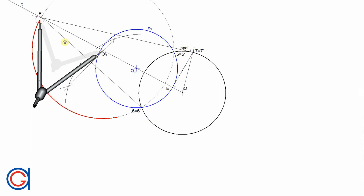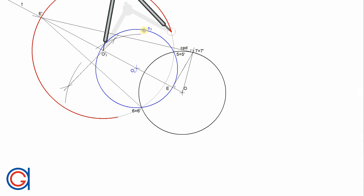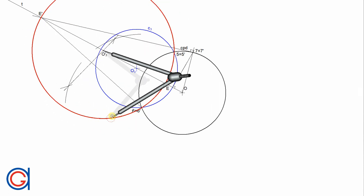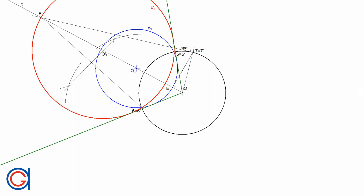We draw C3 prime in a thicker red line. The tangent lines converge on the origin O of the reference circle, confirming the accuracy of the construction.